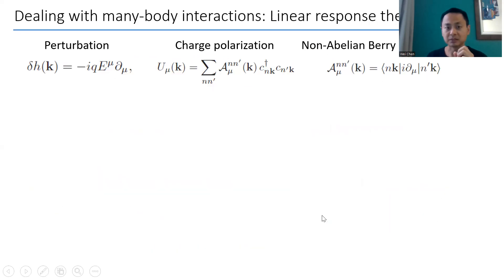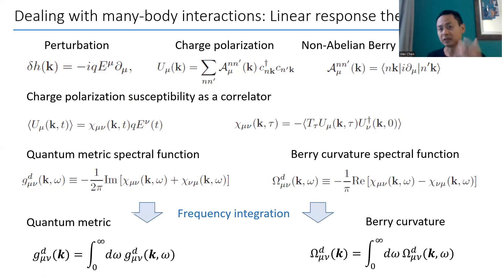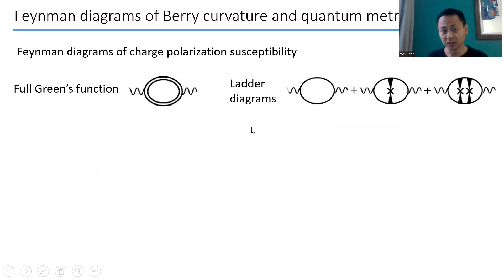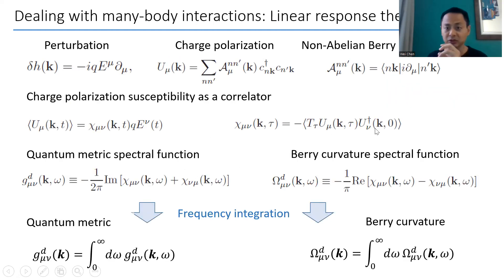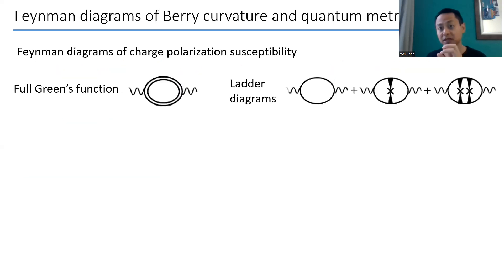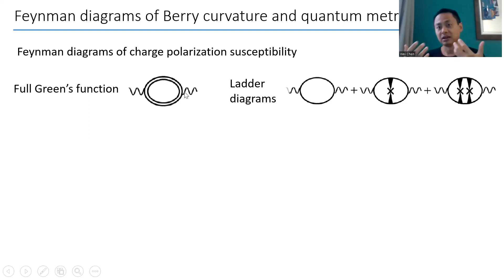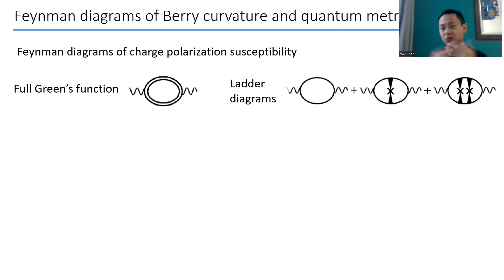The good thing about this susceptibility formalism is that chi_{mu nu} itself, calculated using linear response theory, can be represented by Feynman diagrams. In practice, just like in perturbation theory, you can calculate up to one loop, two loop, or however far your computational power allows.